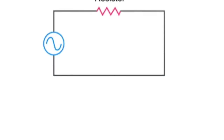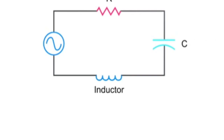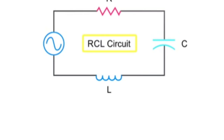Circuits that contain resistors, capacitors, and inductors, either in series or parallel, are known simply as RCL circuits. Specific equations can be used to determine the values of resistance, impedance, current, and voltage in RCL circuits.